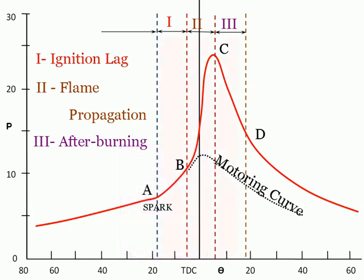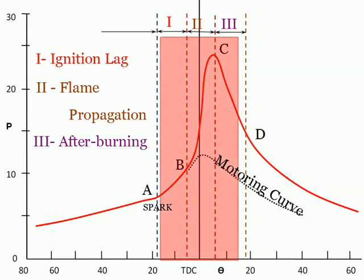Stage 2: Flame propagation starts at point B, where a measurable change in pressure rise is noticed on the indicator diagram. During the ignition lag phase, the first 5–10% of the air-fuel mass has been burned, the combustion process is well established, and the flame front moves very quickly through the combustion chamber. Due to induced turbulence, swirl, and squish, flame propagation speed is about 10 times faster than if there were a laminar flame front moving spherically from the spark plug in stationary air.